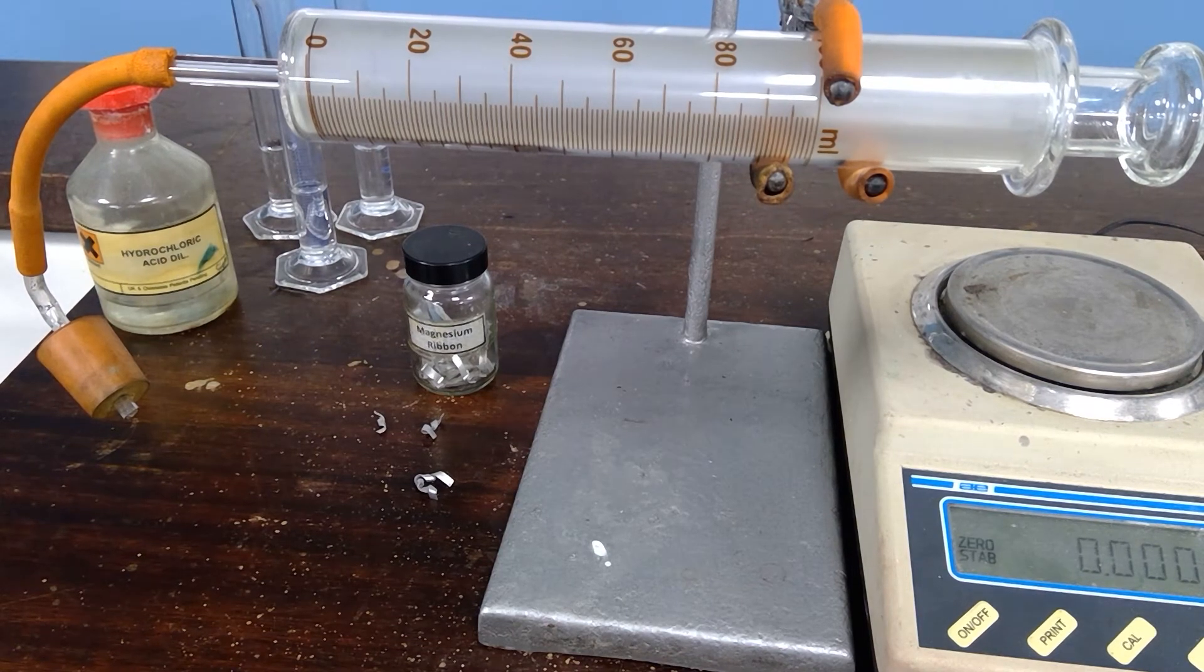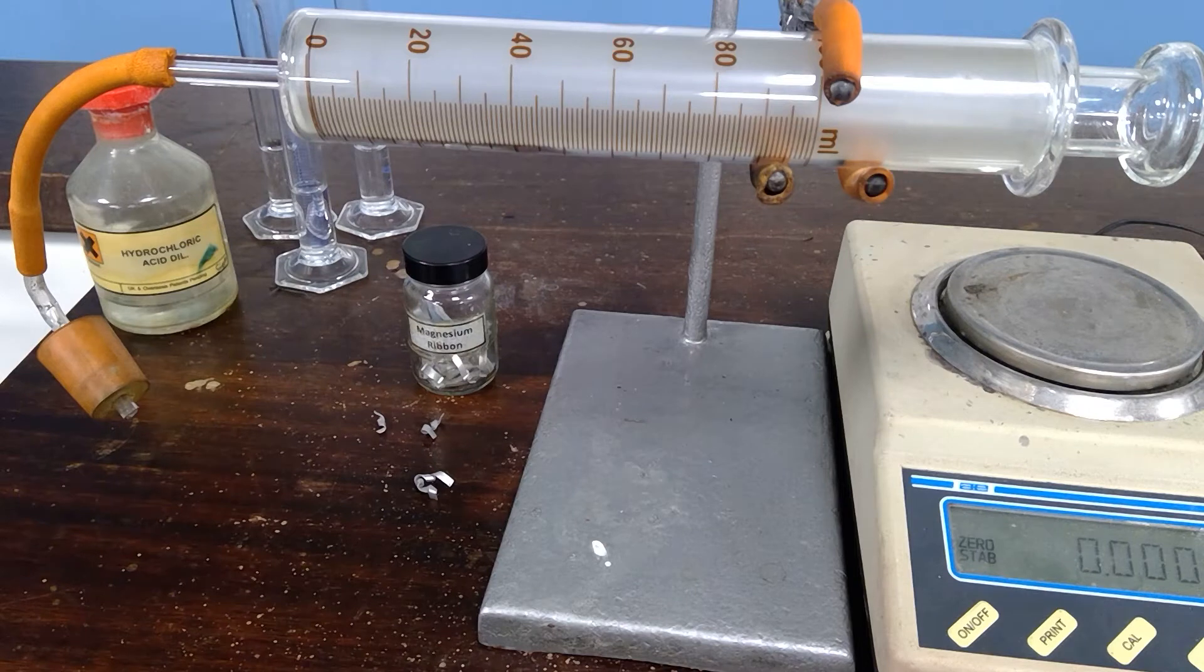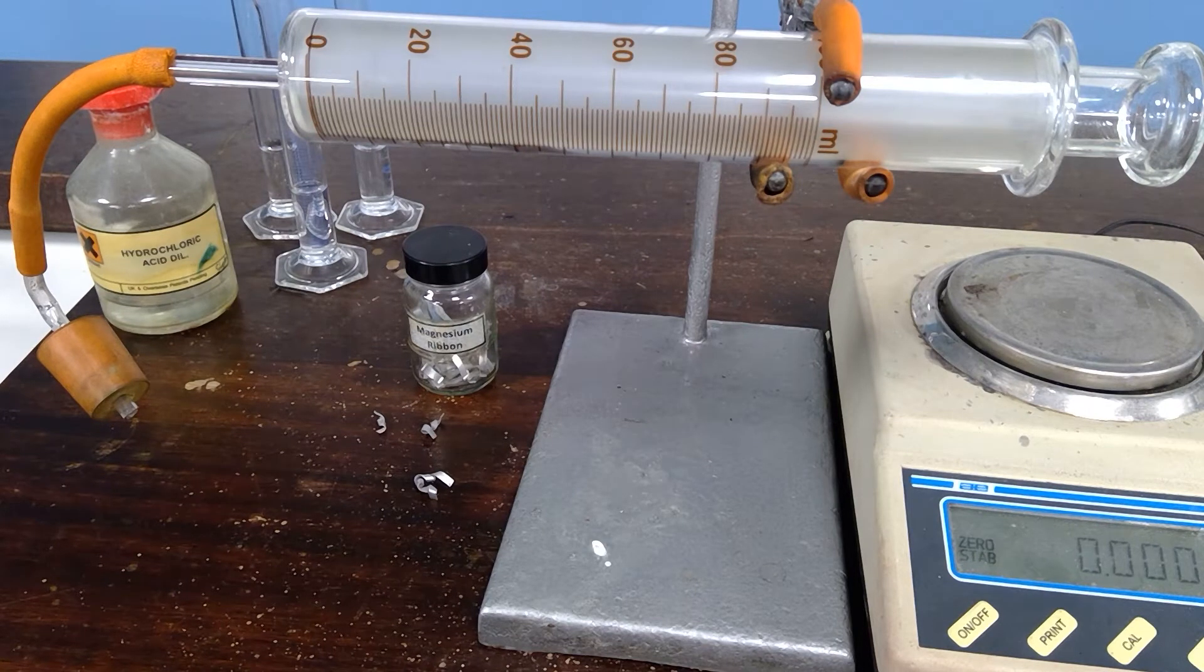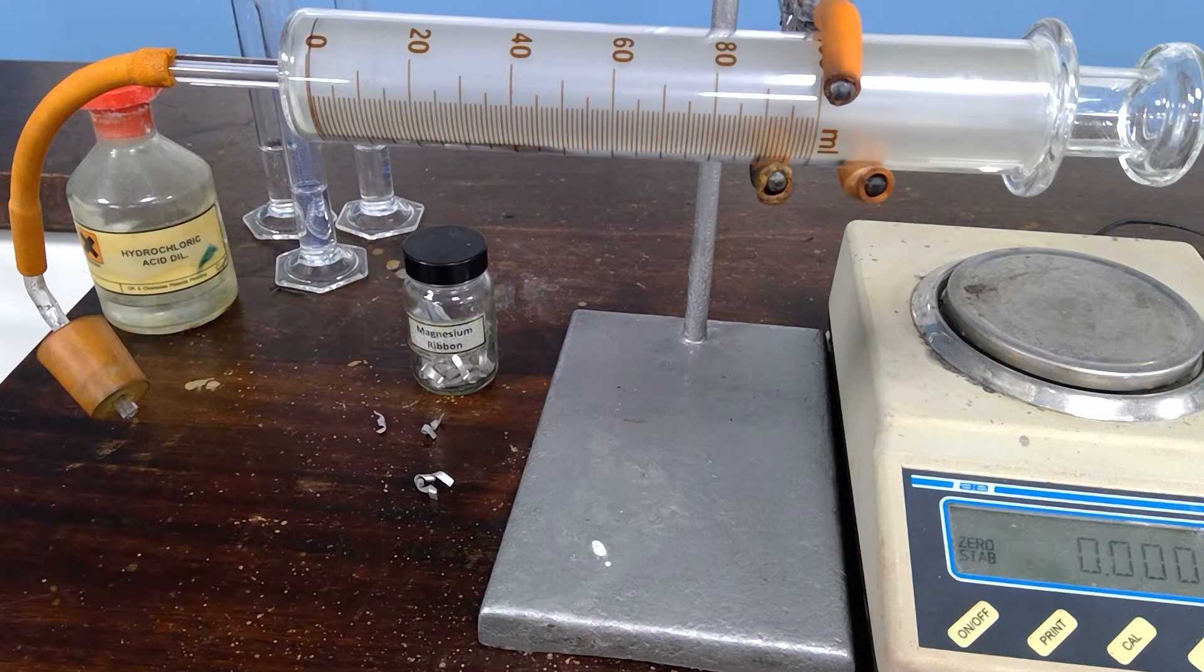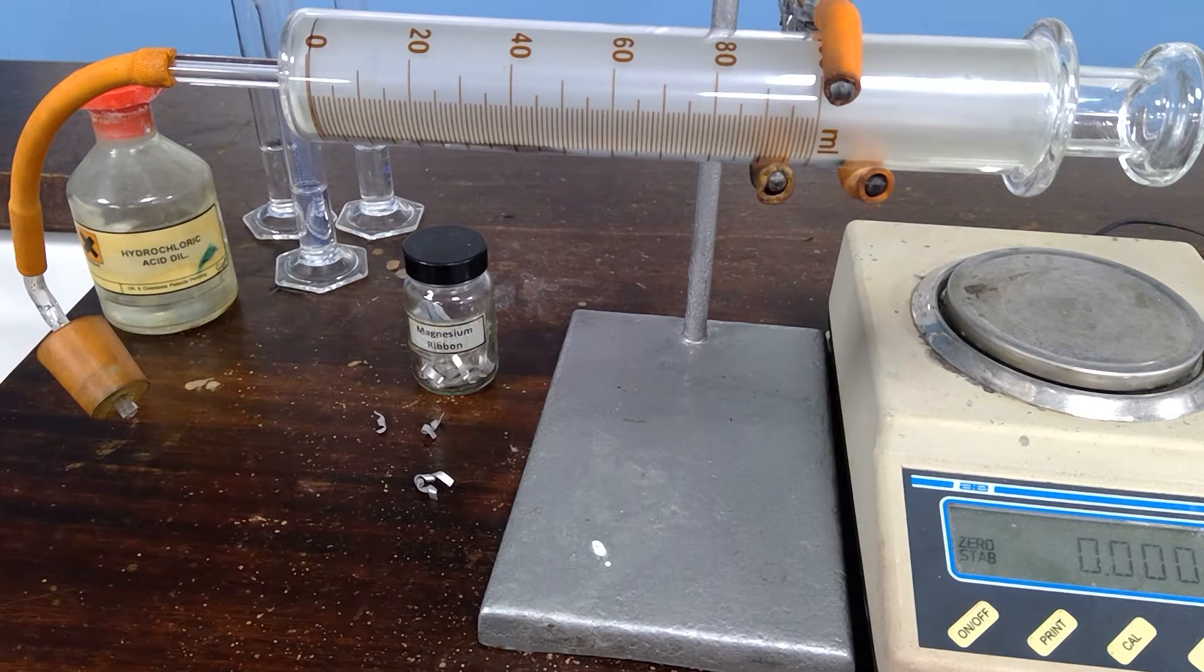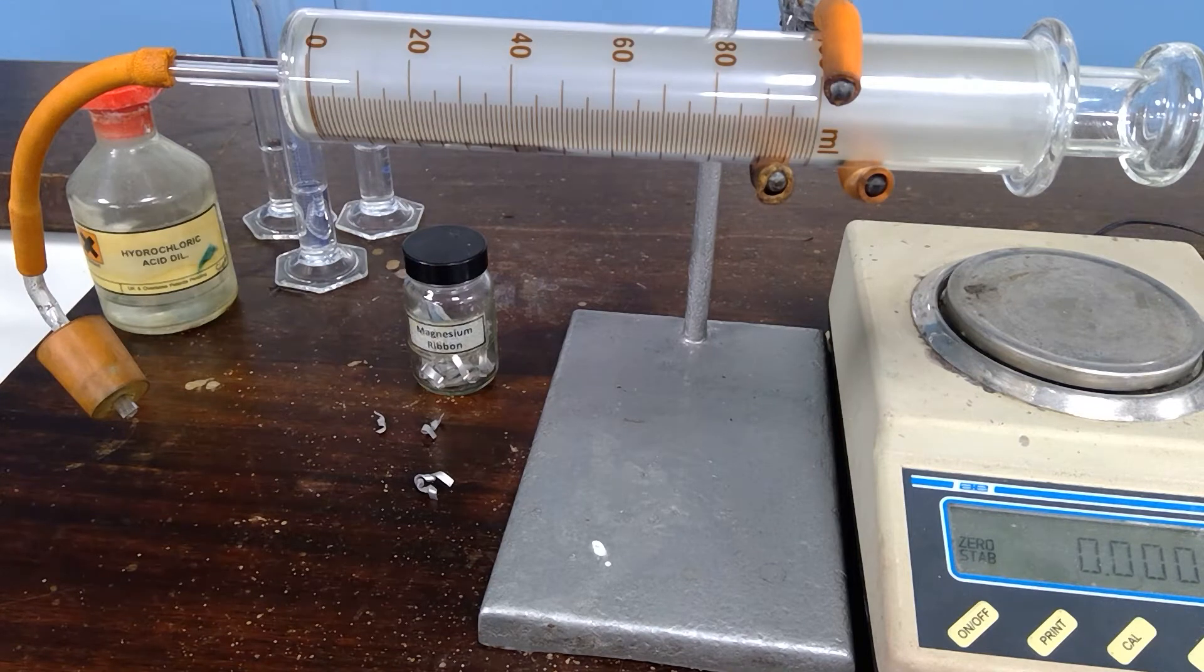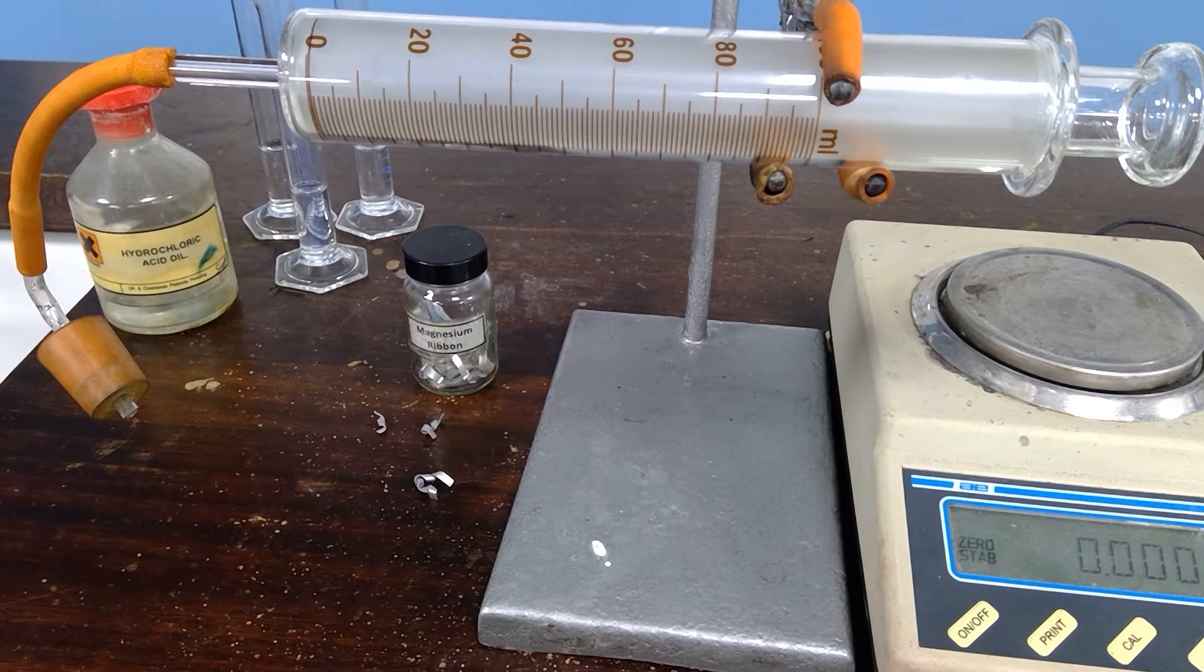This is a video to look at the reaction between magnesium ribbon and dilute hydrochloric acid. The magnesium reacts with the dilute hydrochloric acid to produce magnesium chloride solution and hydrogen gas. In this experiment we can look at the relationship between the mass of magnesium used and the volume of hydrogen gas produced.